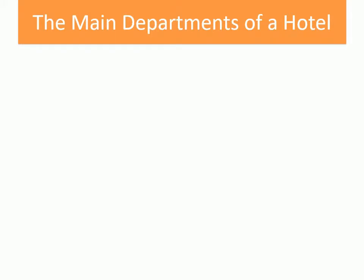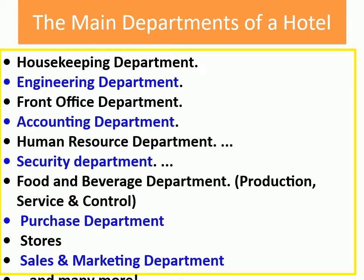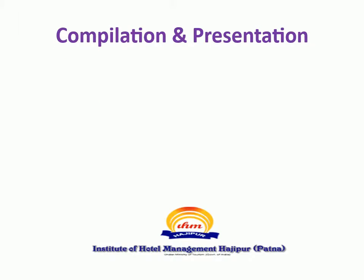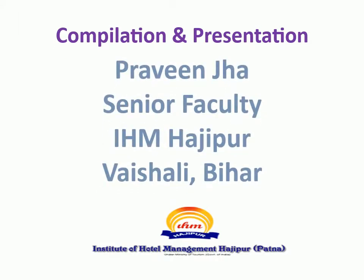The main departments of a hotel. Departments of a hotel are: housekeeping, engineering, front office, accounting, human resource, security, food and beverage — including production, service, and control — purchase, stores, sales and marketing, and many more. A hotel is a highly sophisticated, complex, and refined organization. Compilation and presentation by Praveen Jha, Senior Faculty, IHM Hajipur, Vaishali, Bihar.